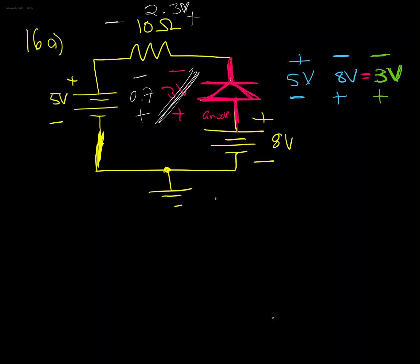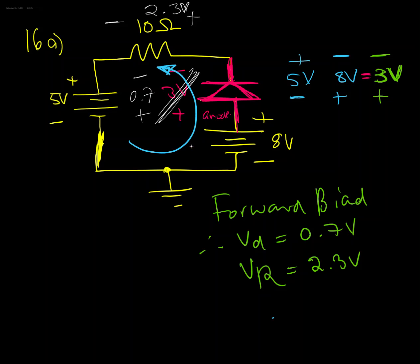This diode is forward biased, therefore the voltage across the diode is 0.7 volts. The voltage across the resistor, VR, in this case is 2.3 volts. We're going to have current flow in our circuit flowing in this direction.